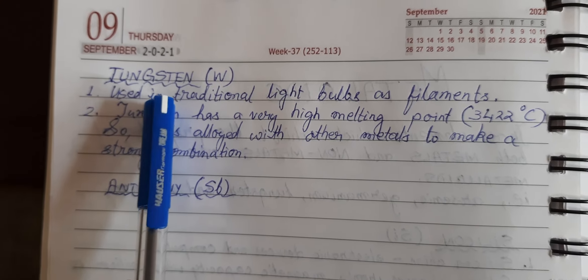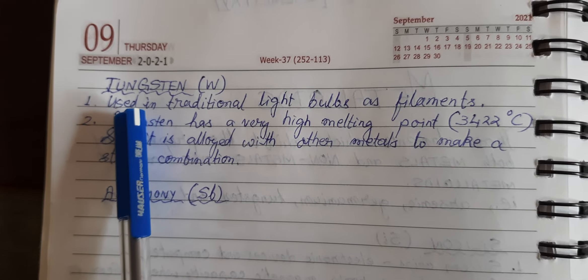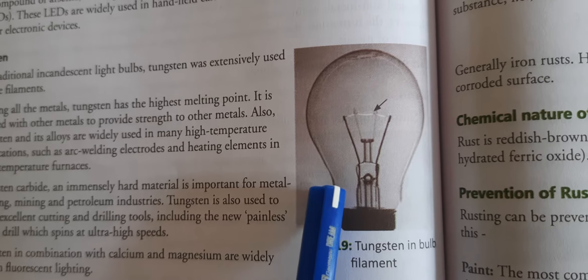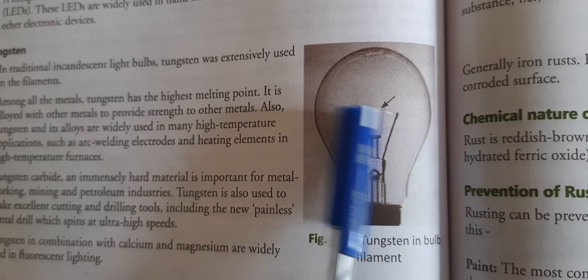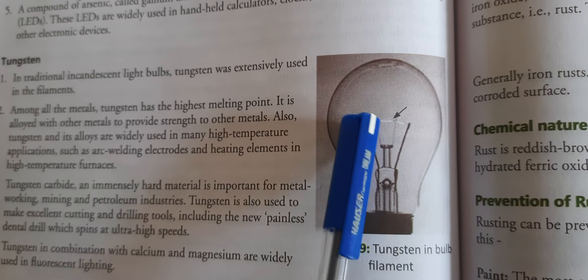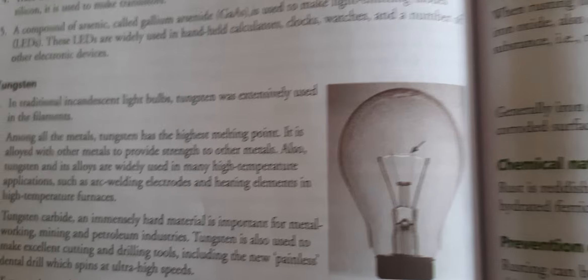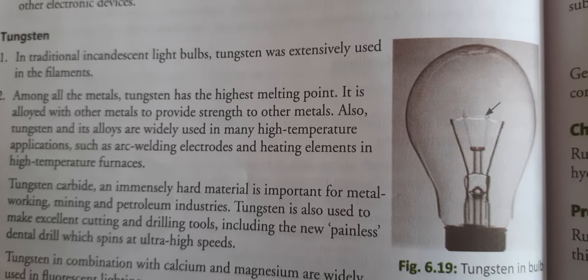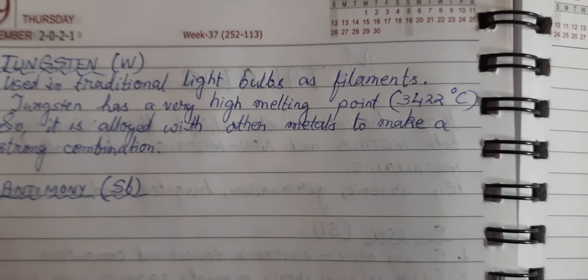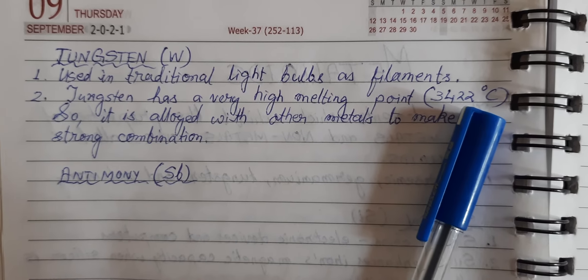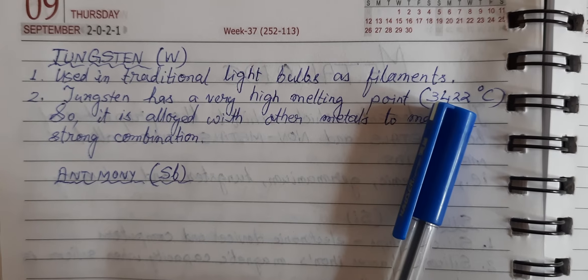Next comes tungsten, with symbol W. Earlier, old-fashioned bulbs had a filament inside, and this filament was made up of tungsten. Tungsten has a very high melting point of 3422 degrees Celsius, so it can tolerate a lot of temperature and does not melt easily. This property of tungsten is used in making the filament.